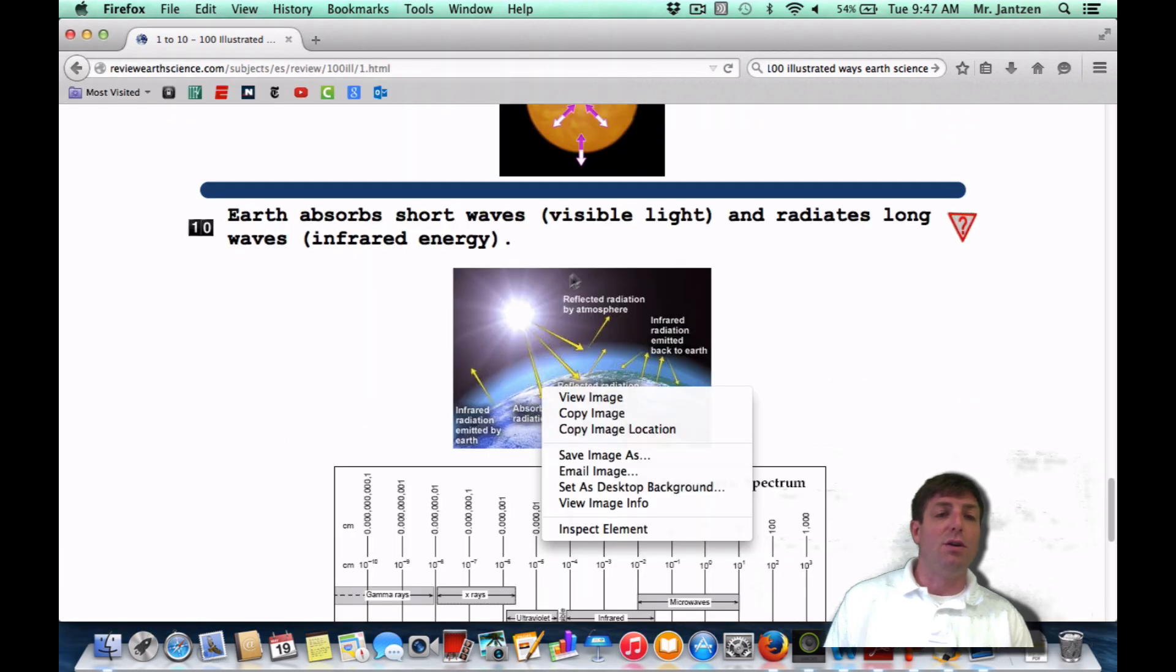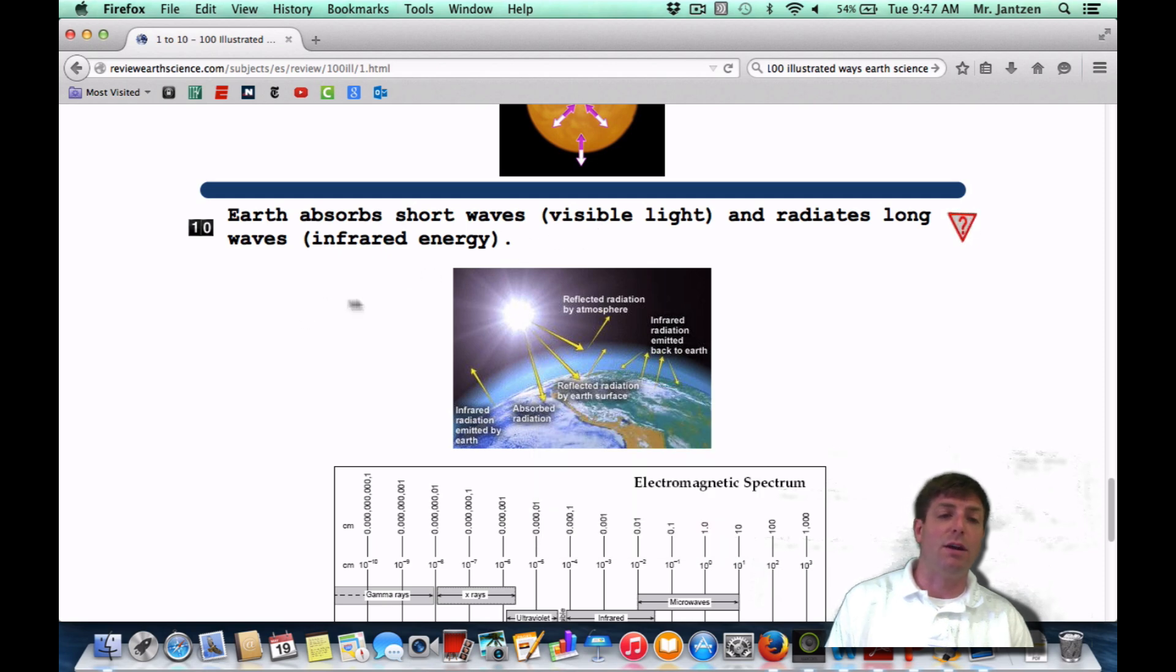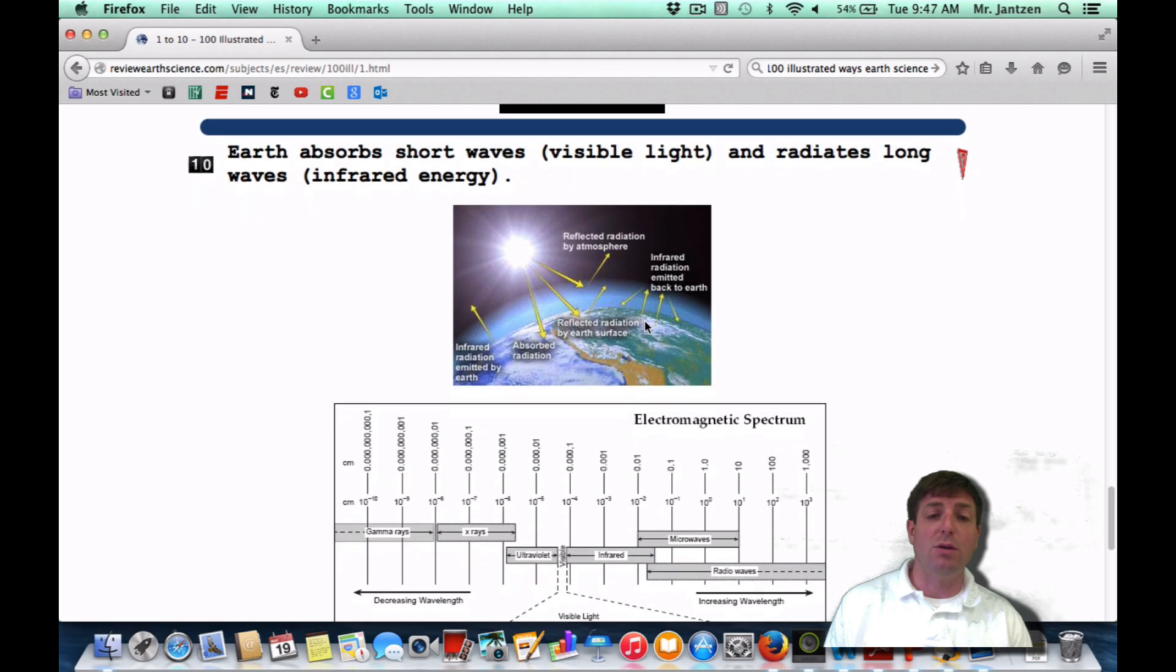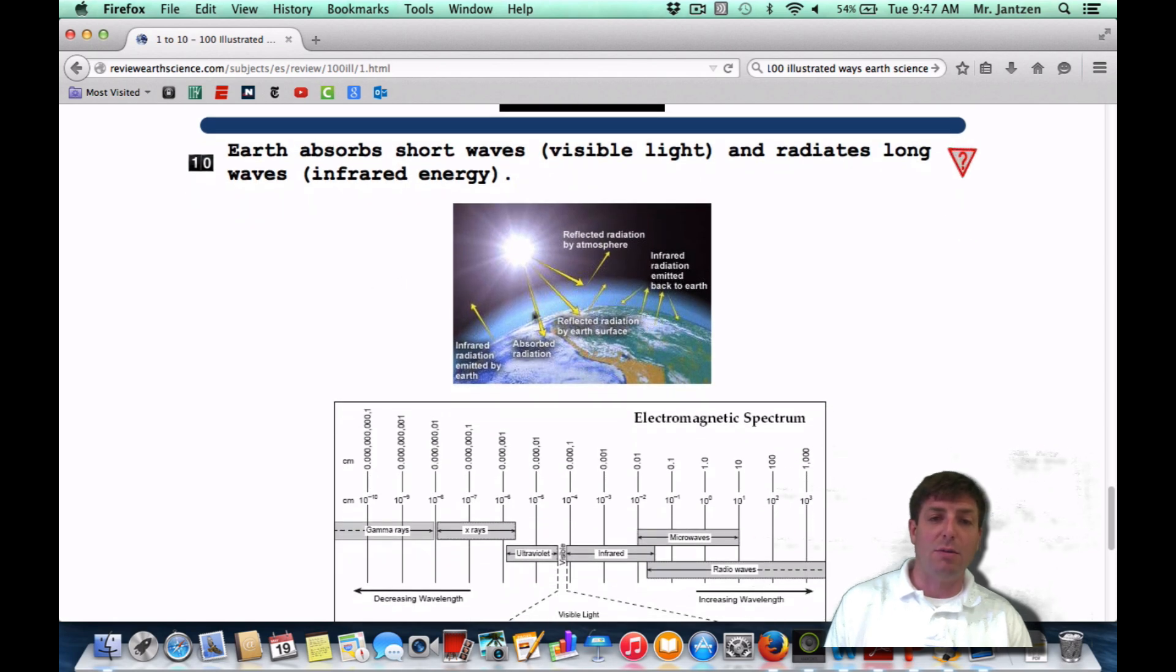Number ten. The Earth absorbs short waves and radiates long waves. Short waves are visible light. Long waves is infrared energy. So this is an example of the greenhouse effect. It's basically showing you how short wavelengths come into the atmosphere, and then they get re-radiated as heat, as heat energy, and some of that heat energy gets trapped and heats up the Earth. That's why we have life on Earth.